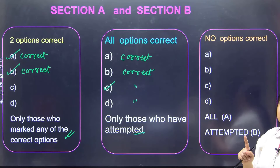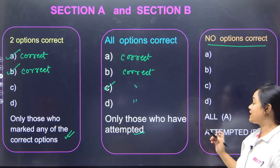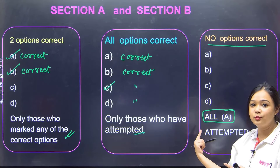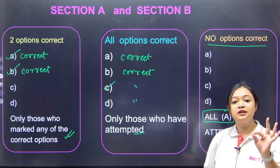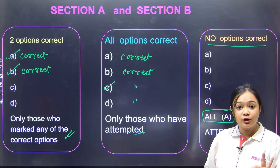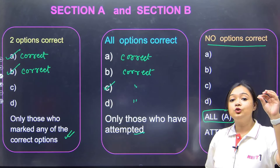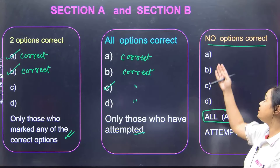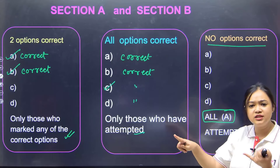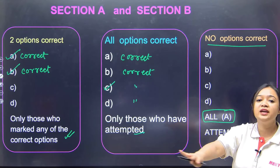Aajao — agar koi bhi option sahih nahin hai, agar no option is correct, matlab A, B, C mein se koi option correct nahin hai. Toh Section A mein jitne bhi bachon ne NEET diya hai — Section A ka agar yeh question hai, matlab Section A mein 35 questions rahate hain, 35 compulsory hota hai. Compulsory ka matlab yeh nahin ki 35 ke 35 aap karo hi — aapko jo aata hai aap woh karo ge, kyunki galat mark karne pe minus 1 mil jata hai. Toh Section A mein jitne bhi bachon ne appear kiya hai NEET ka exam — chahe aapne isse attempt kiya ho, nahi attempt kiya ho — doesn't matter, yeh question ka mark sabhi ko mil jayega.